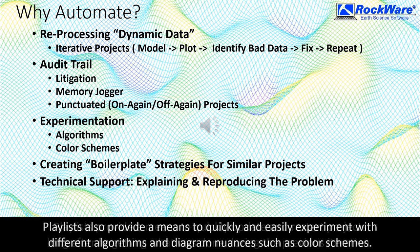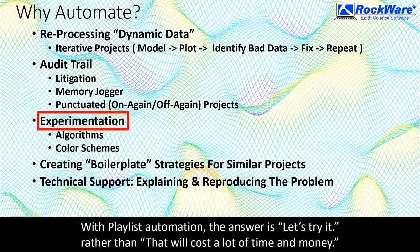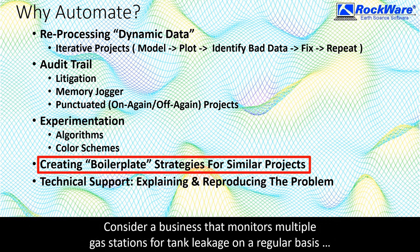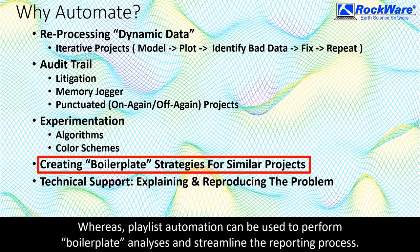Playlists also provide a means to quickly and easily experiment with different algorithms and diagram nuances such as color schemes. As an analogy, consider a recently completed building construction in which someone asks what the building would look like if it was rotated five degrees. With playlist automation, the answer is 'let's try it' rather than 'that will cost a lot of time and money.' Consider a business that monitors multiple gas stations for tank leakage on a regular basis. Repeating the same steps for every gas station in every time interval can be a tedious process, whereas playlist automation can be used to perform boilerplate analyses and streamline the reporting process.